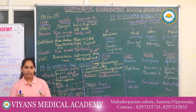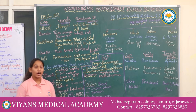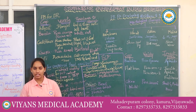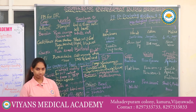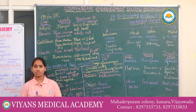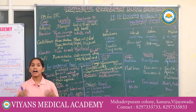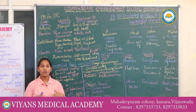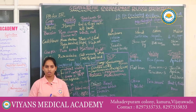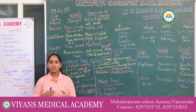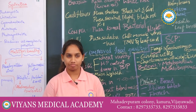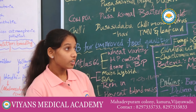Now coming to millets. Hybrid varieties of millets include maize, jowar, bajra, etc. Hybrid breeding is used for high yielding. This hybrid breeding is also used to grow plants under water stress conditions.